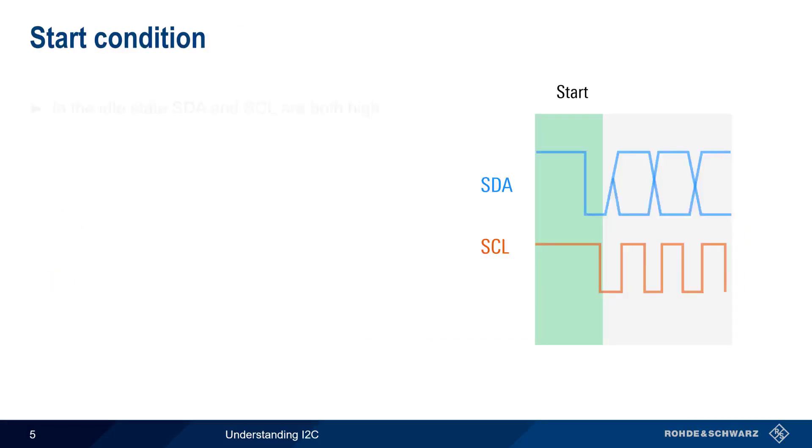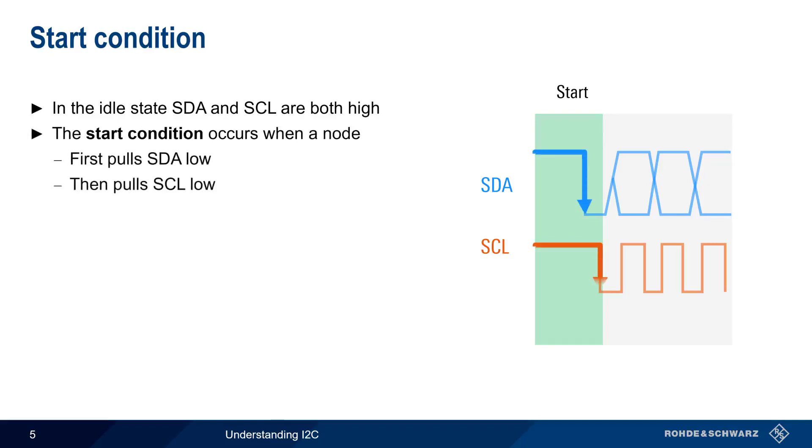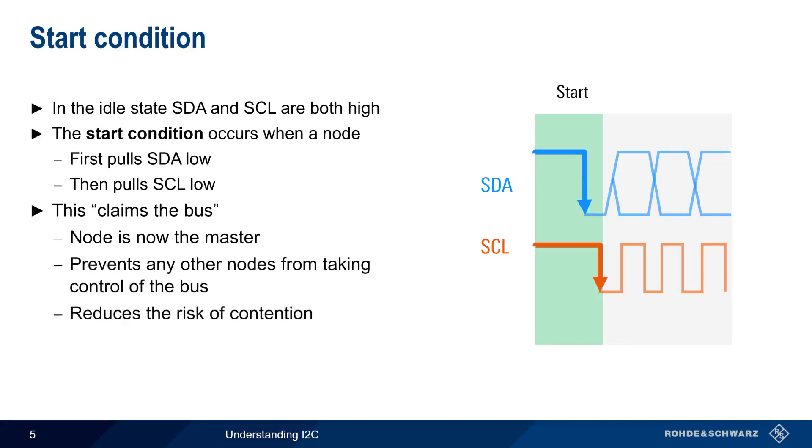In I2C, the idle state of both lines, SDA and SCL, is high. The start condition occurs when a node first pulls SDA low, and then pulls SCL low. Pulling these lines down in this order is used to claim the bus, and the node that claims the bus is now the master. This procedure prevents other nodes from taking control of the bus, and thereby reduces the risk of contention, that is, two nodes trying to claim or use the bus at the same time. Once a node has seized the bus, that node also begins sending the clock signal that is used by both the master and the slave.